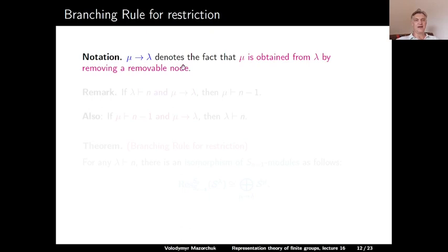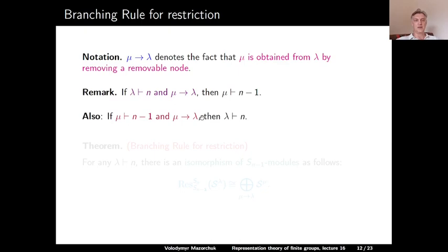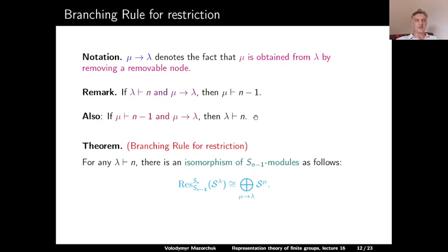We denote by mu → lambda the fact that mu is obtained from lambda by removing a removable node. If lambda is a partition of n and mu → lambda, then mu is a partition of n-1. The first part of the main theorem—the branching rule for restriction—states: for any partition lambda of n, there is an isomorphism of S_{n-1} modules. Restricting the Specht module S^lambda from S_n to S_{n-1} is isomorphic to the direct sum of all Specht modules S^mu taken over all mu such that mu → lambda. Note that all multiplicities here are 1.